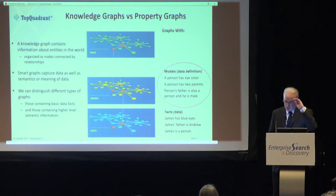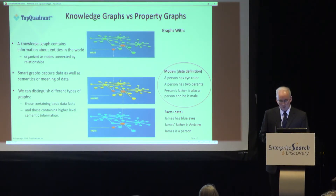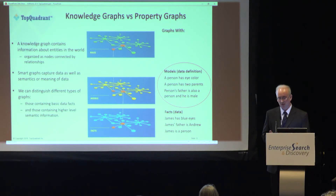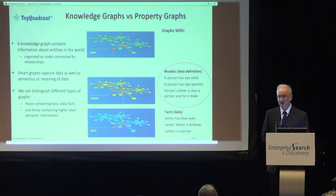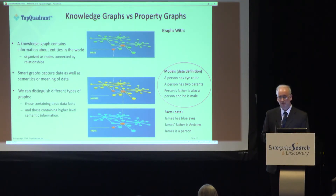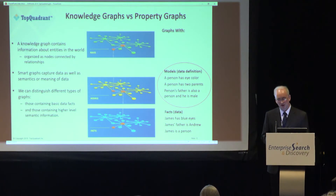At the model layer, in the model graph, we define what a person is or what would be true about a person. So a person has eyes, eyes have eye color, a person has two parents, and a person's father is also a person with gender male.